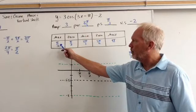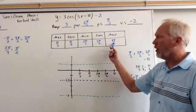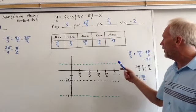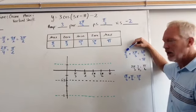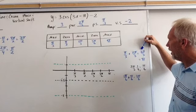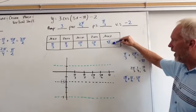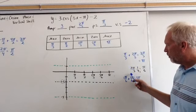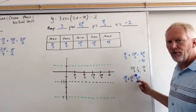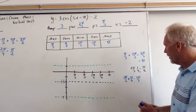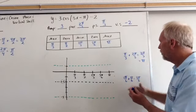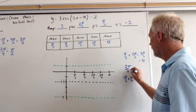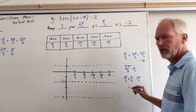We always start with our phase shift, pi over 3. How do I find my max? I take my phase shift plus my period. So phase shift plus the period is 3 pi over 3, which is just pi. Now, I take my period divided by 4.